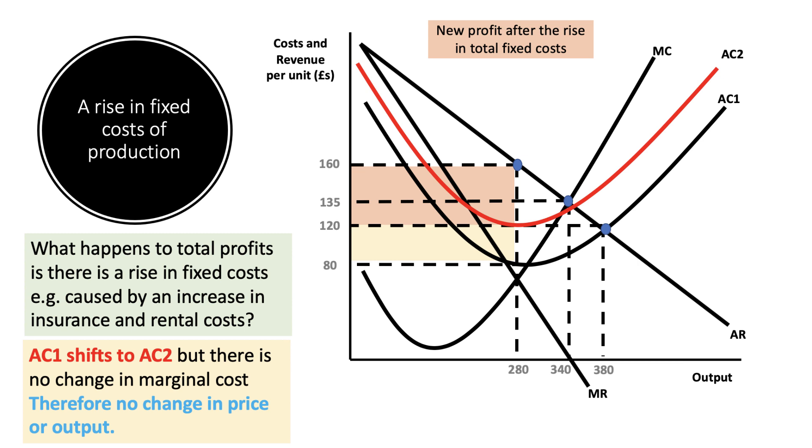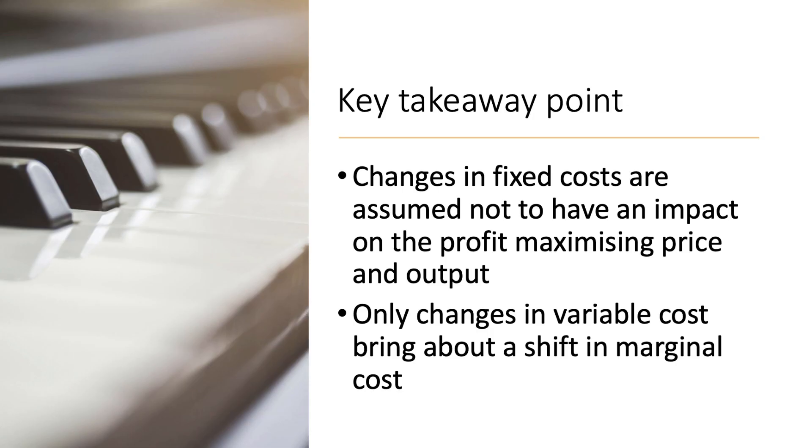The firm won't increase the price. They just have to take a hit to their profits. Key takeaway point really is that changes in fixed costs are assumed not to impact on the profit maximizing price and output. Only changes in variable cost bring about a shift in marginal cost, which would change the profit maximizing equilibrium.